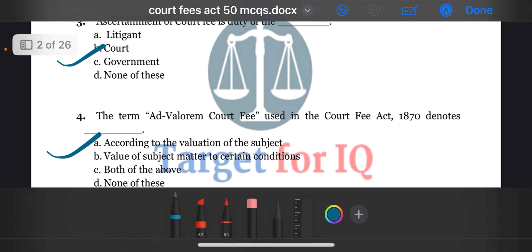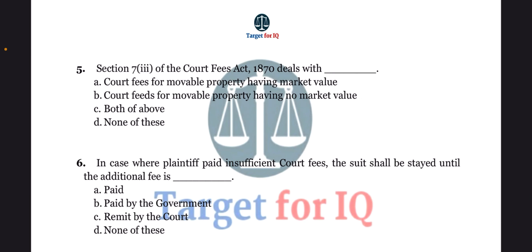The options are A. Court fees for movable property having market value, B. Court fees for movable property having no market value, C. Both of the above, or D. None of these.